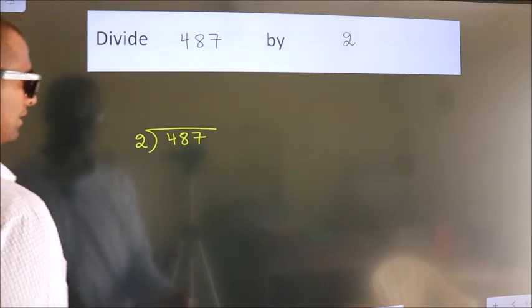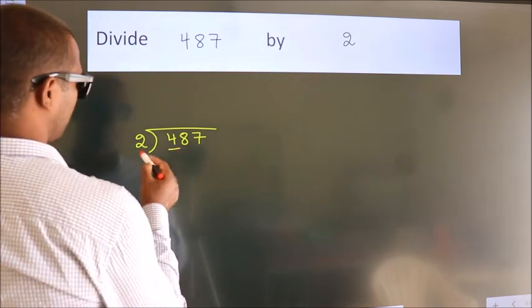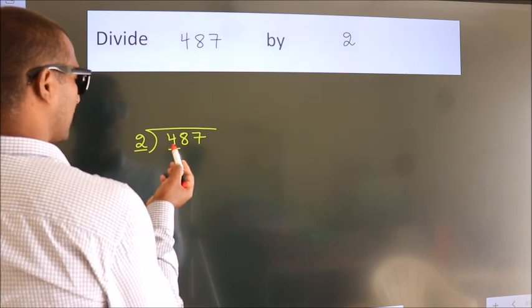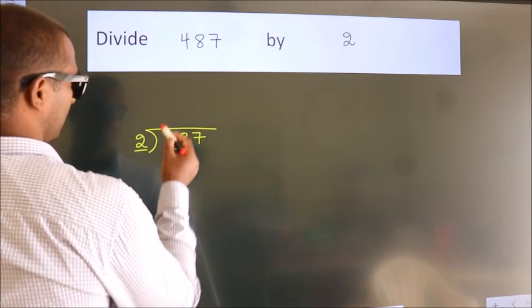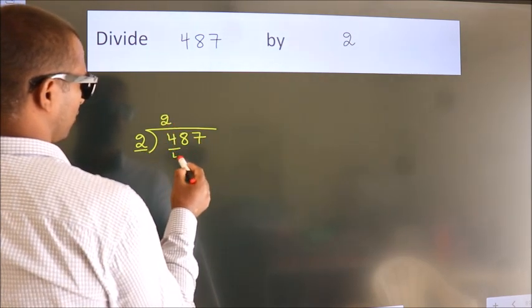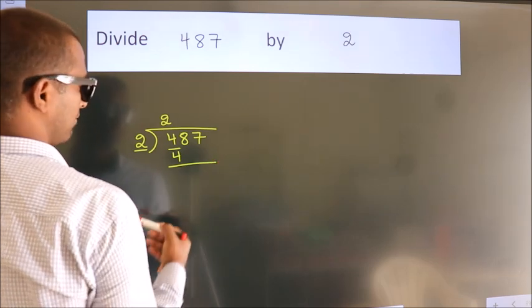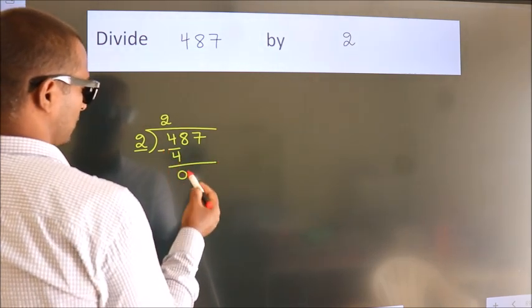Next, here we have 4, here 2. When do we get 4? In 2 table. 2 2's, 4. Now, we should subtract. We get 0.